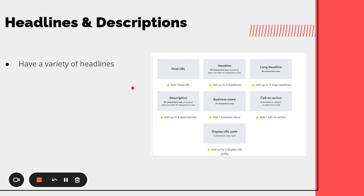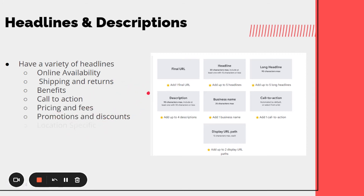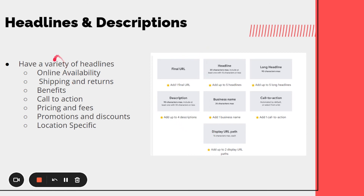For the actual copy in your Performance Max campaigns, Google recommends a few different styles: availability online, shipping and returns, benefits of the actual product, a call to action to buy, pricing and fees, any promos you have running, and location-specific messaging — whether that's a USA promotion or if you sell only to a certain state. You can see the specified character counts for all these different assets.